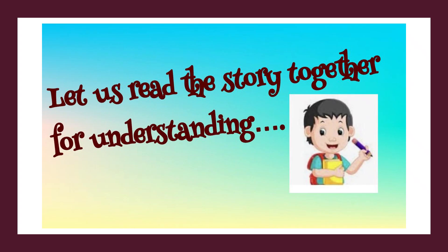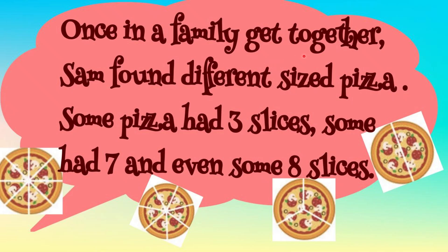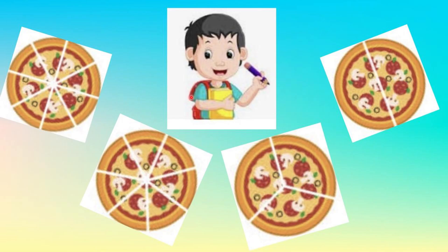You can note that down. Now let's read a story together for firm understanding. Once at a family get-together, Sam found different sized pizzas. Some pizza had three slices, some had seven, and some had eight slices. Here is Sam with the different pizzas. This pizza has been divided into two parts, the next into three parts, the next into seven slices, and the last one into eight slices.